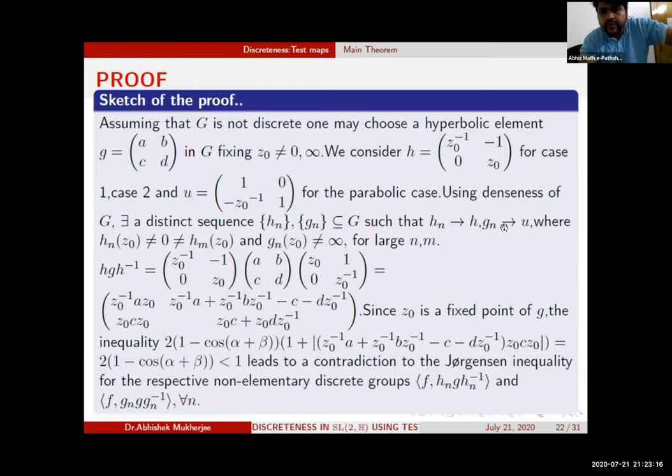Since G is not discrete, using the denseness of G you can get distinct sequences h_n and g_n h_n for the first and second case, and g_n for the last one satisfying these properties. Then you will have this equation: hgh⁻¹. This matrix will give you the conclusion. Since z₀ is a fixed point of g, that part is zero. Using the inequality we obtained in our first work, this inequality leads to a contradiction to the inequality for any non-elementary discrete subgroups.